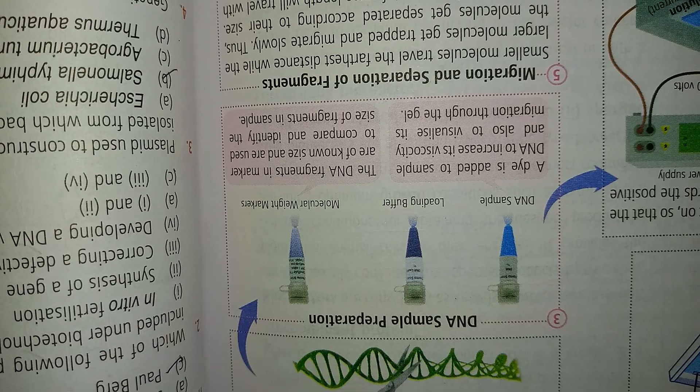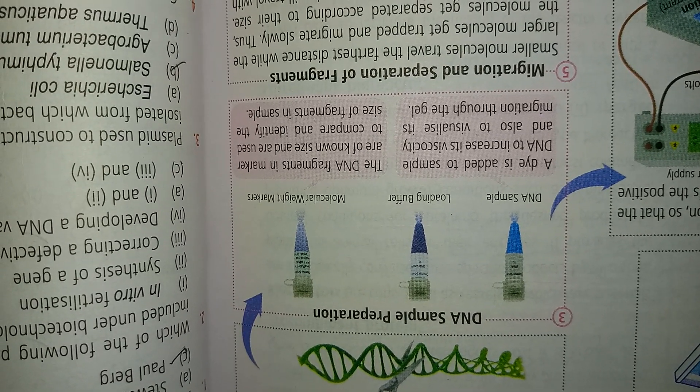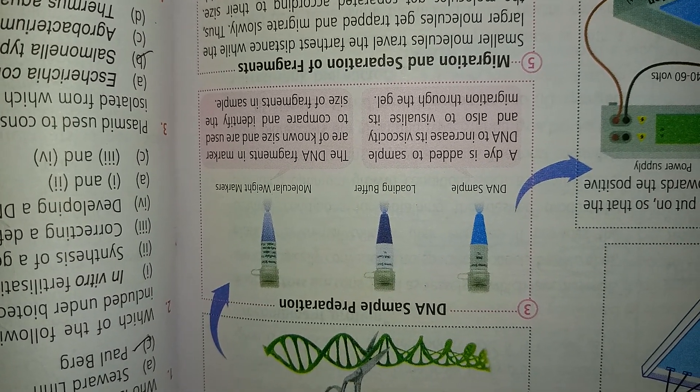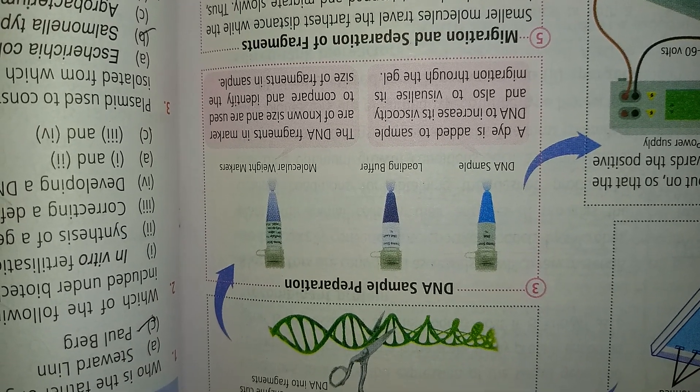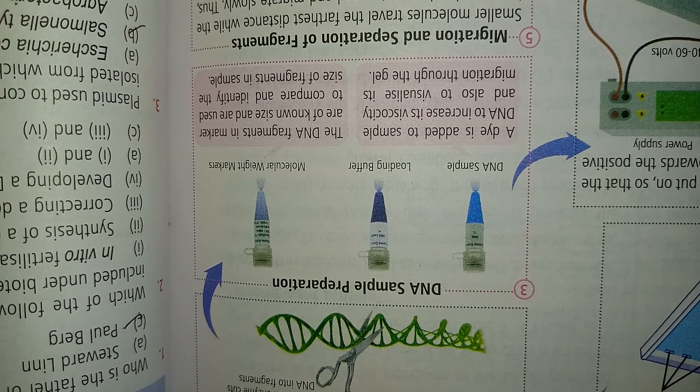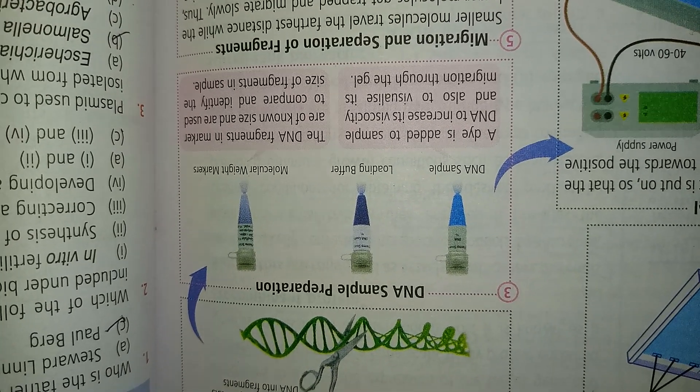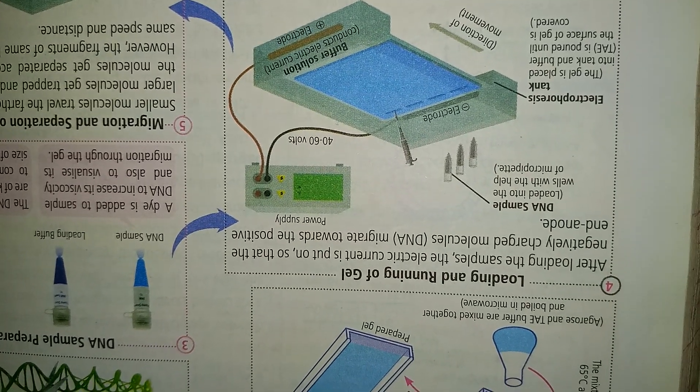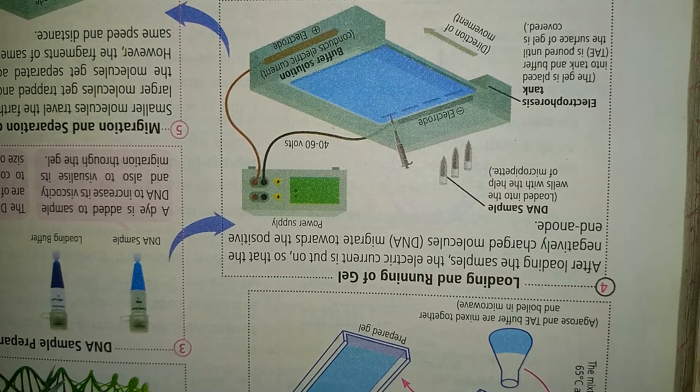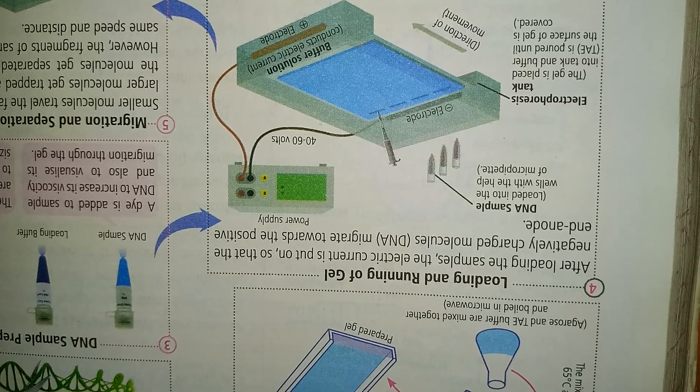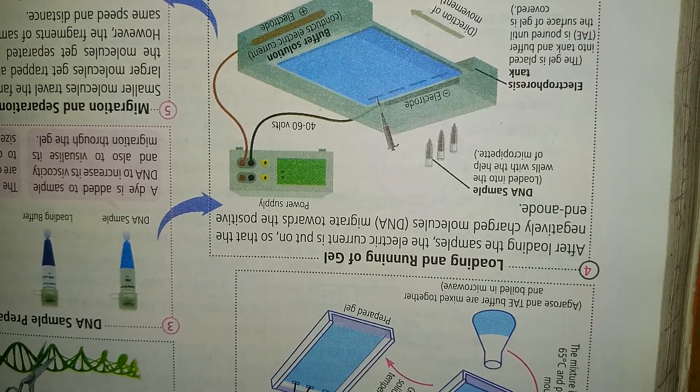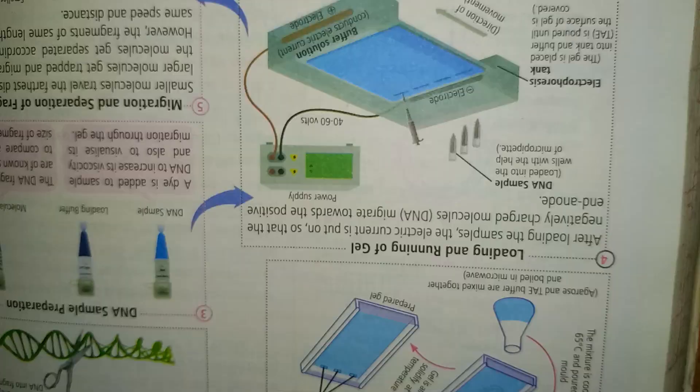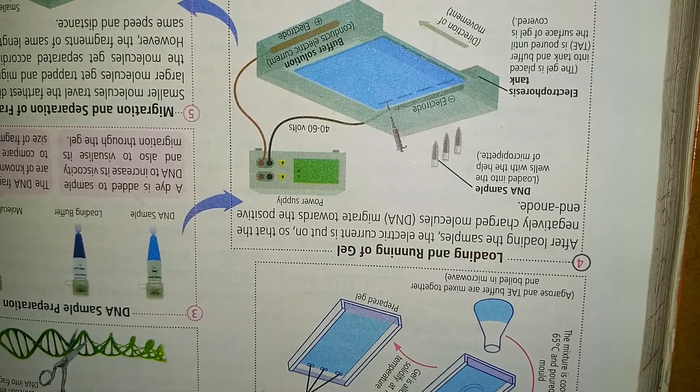Dye is added to sample DNA to increase its viscosity and also visualize its migration through the gel. DNA fragment markers of known size are used to compare and identify the size of fragments in the sample.